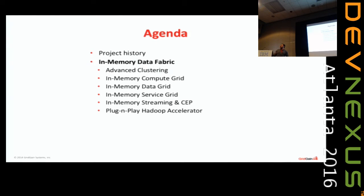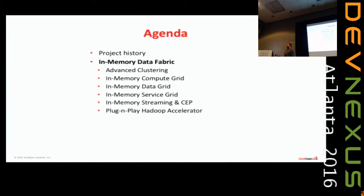Although we began with the bulk of development from GridGain, today we have more committers and participation from outside than from GridGain. So essentially it's a pretty mature, pretty old project. If you count all the versions, we're currently on version 7 of this project, although Apache Ignite is version 1.5 — but again, it's just naming and historical things.